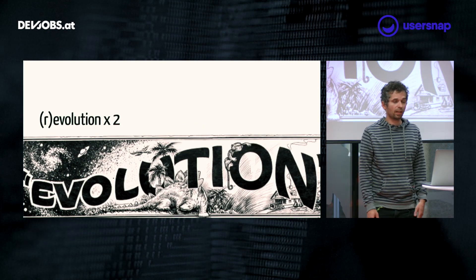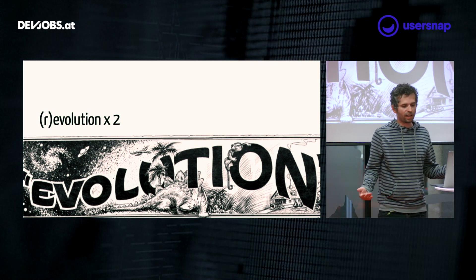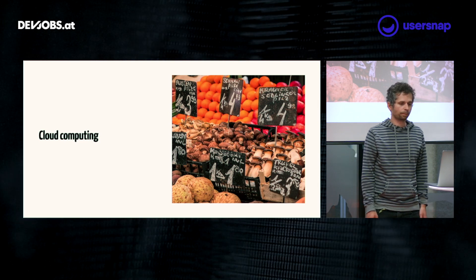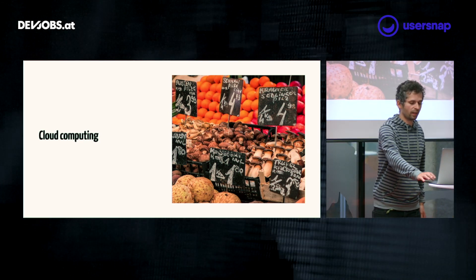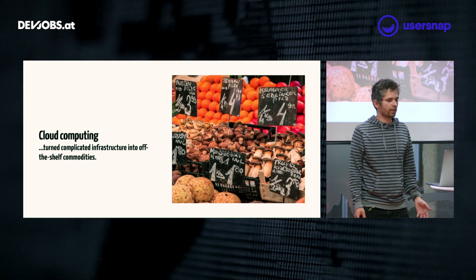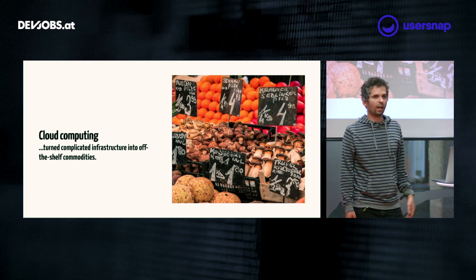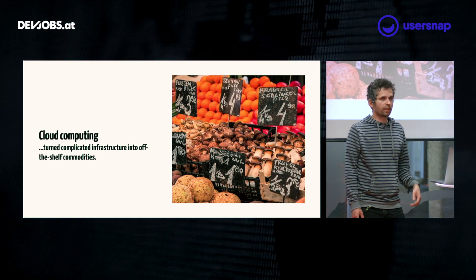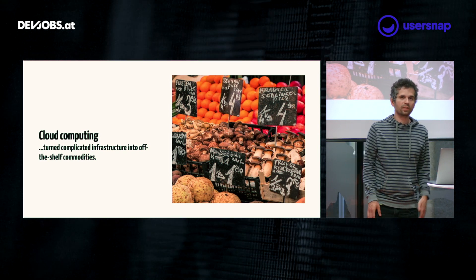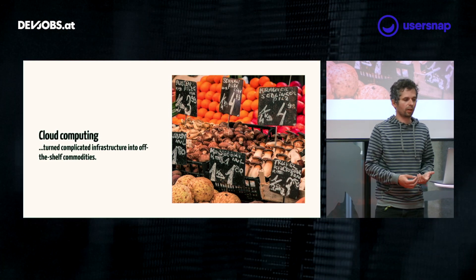But then something interesting happened. There were two revolutions — or evolutions if you want — that happened in the last decade and a half. The first one was cloud computing. What did cloud computing really do for us when talking about infrastructure? Cloud computing turned complicated infrastructure into just off-the-shelf commodities. In 2009, when I wanted to build a load balancer, I would need to provision a server, install NGINX, set up reverse proxies, set up firewall rules — all that was manual and tedious work. Nowadays I just click in the AWS interface and pay. That's it.